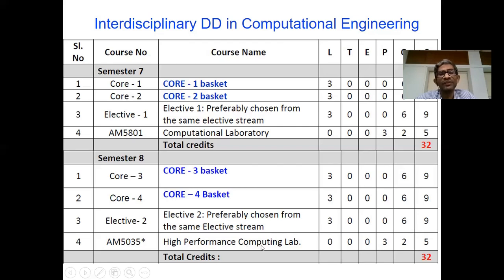Let me show you what these four core baskets are: Core one is on numerical methods, core two will be on computational implementation, core three will be on discretization methods, and core four is on high-performance computing.